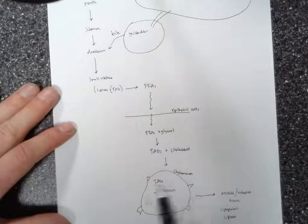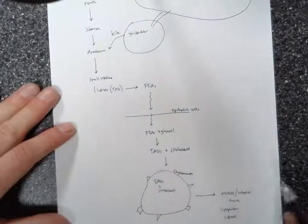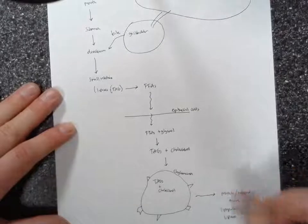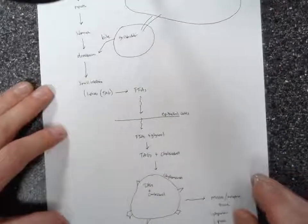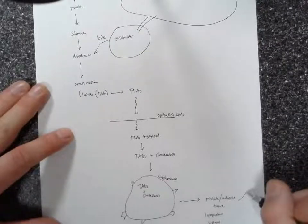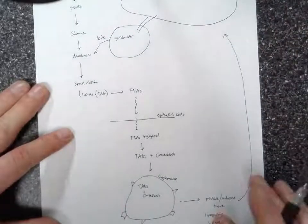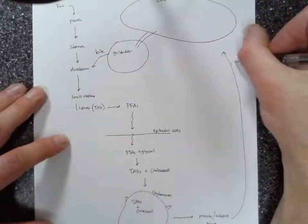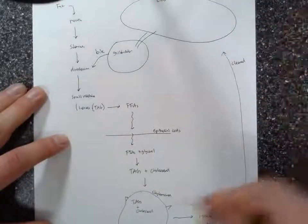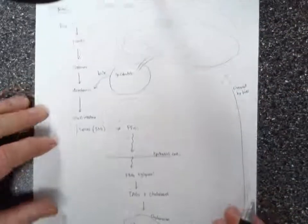So the chylomicrons serve as a delivery system for dietary triacylglycerols. After they've deposited the goods, they are going to pass back through the bloodstream and end up being cleared by the liver. So whatever's left of these chylomicrons will be cleared by the liver and recycled.